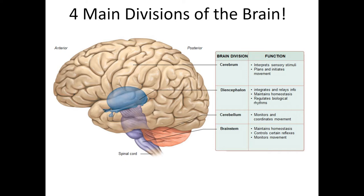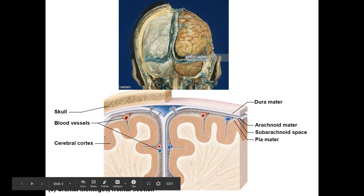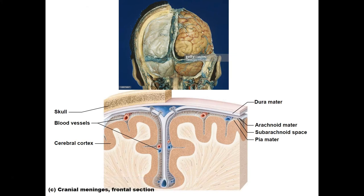Before looking at individual regions, let's examine the overall structure and surrounding tissues. Starting superficially, we have a skull for protection, but the outer brain is wrapped inside protective tissues called meninges. The three primary meninges are: the dura mater (most superficial, tough and leathery), the arachnoid mater, and the pia mater, which directly attaches to the brain surface. Cerebral spinal fluid circulates in the space between the arachnoid mater and pia mater.